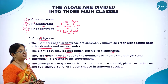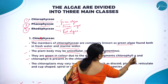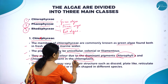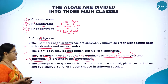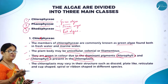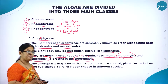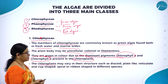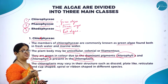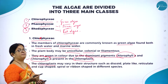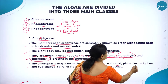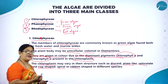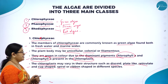They are green in color because of the dominant pigments chlorophyll A and chlorophyll B, present in the chloroplast. The chloroplast structure may vary — it might be discoid, plate-like, reticulate (in the form of a network), cup-shaped, spiral, or ribbon-shaped. For example, in Spirogyra the chloroplasts are ribbon-shaped.